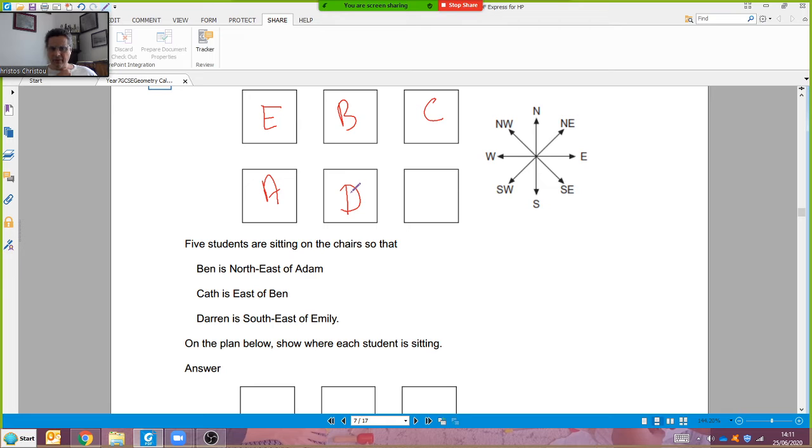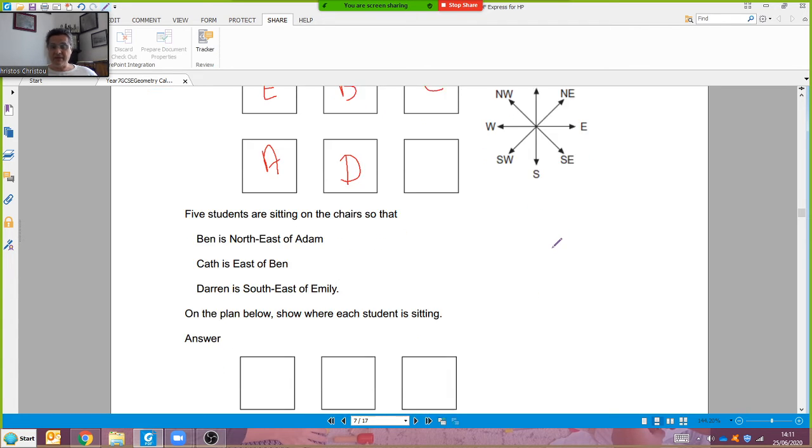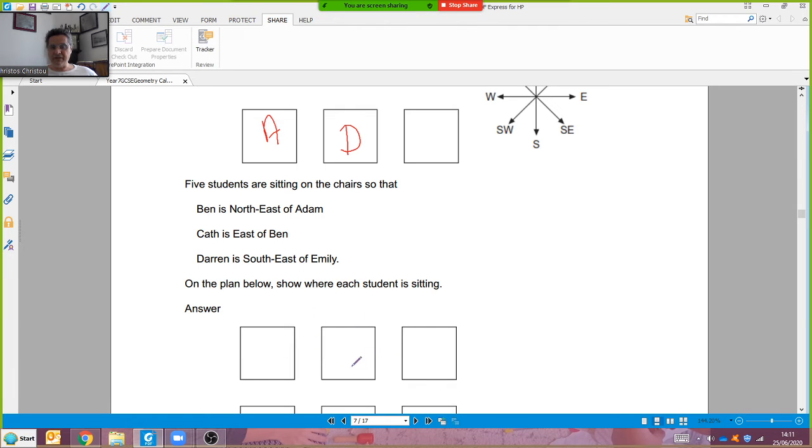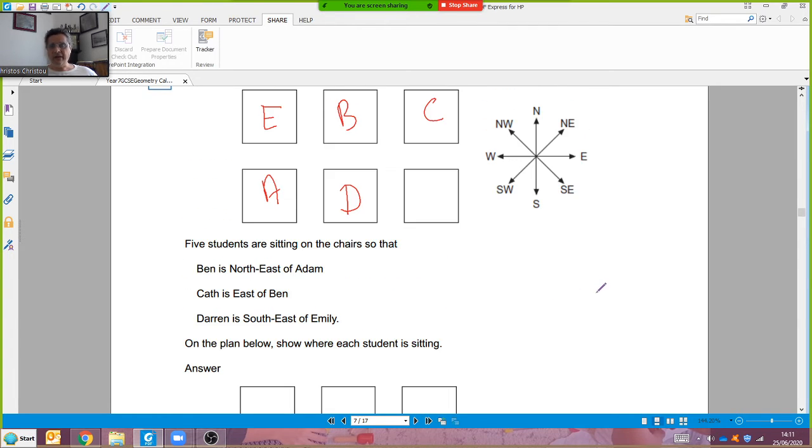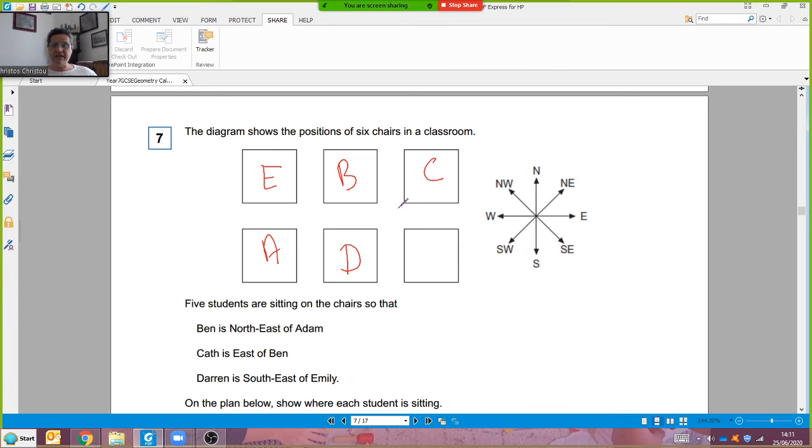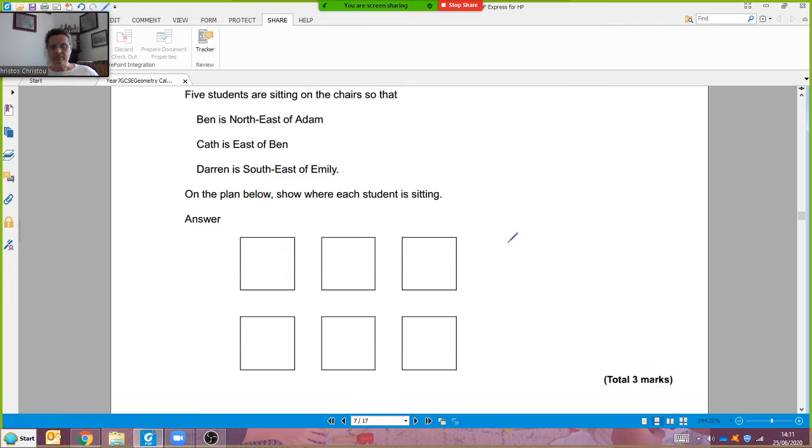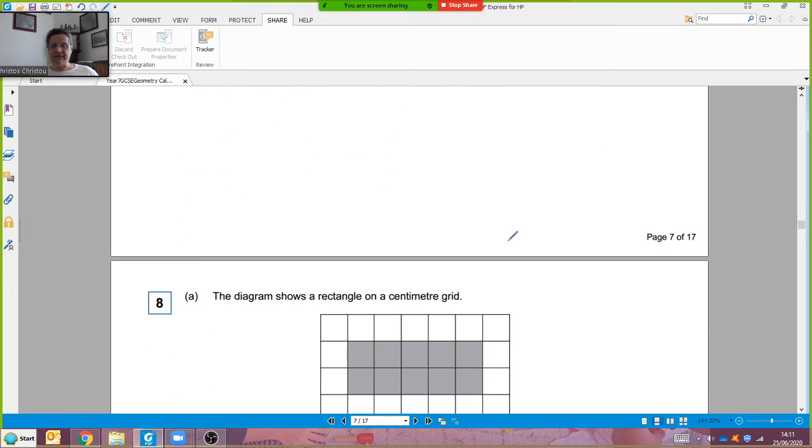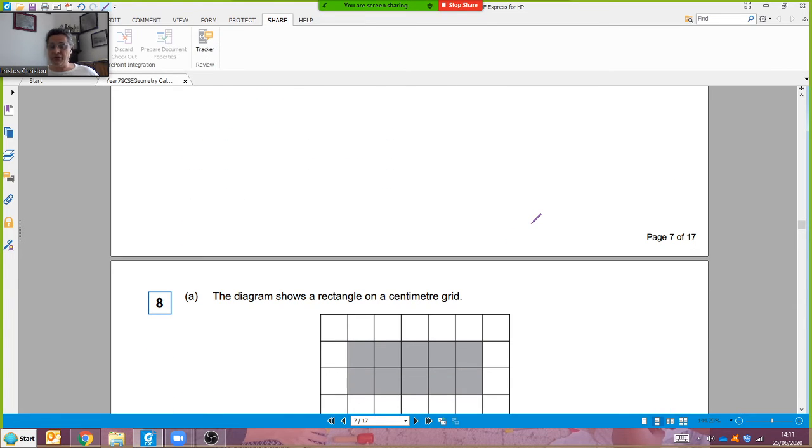If Darren's going to be southeast of Emily then Emily's got to be in that top left corner. She should be northwest of Darren. So if you look at all these three descriptions it's very difficult. You've got to try and get these and get three marks. You don't have to write their names just go E, B, C, A, D.